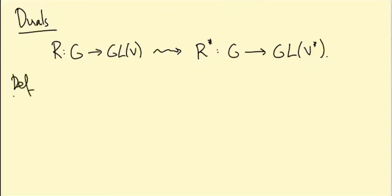Well the dual vector space V dual, V star, is defined to be the set of linear maps from V to the field we're working over which is usually C.